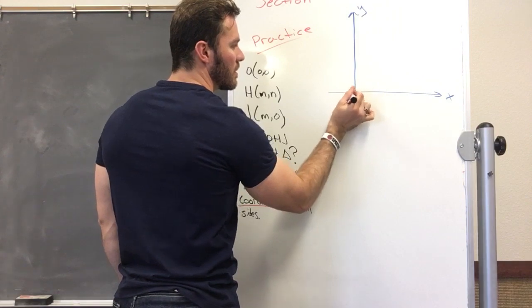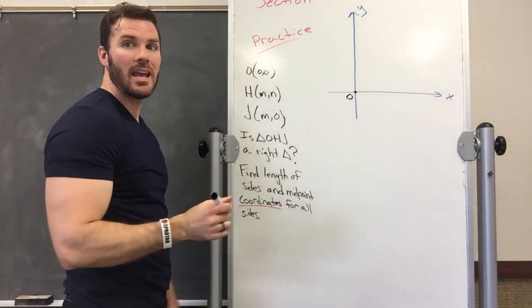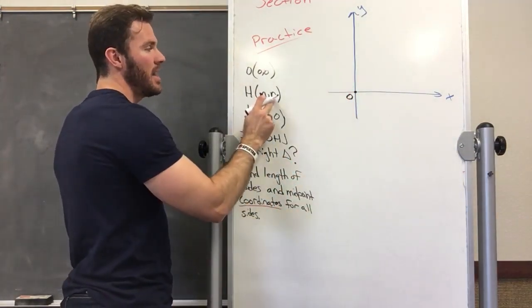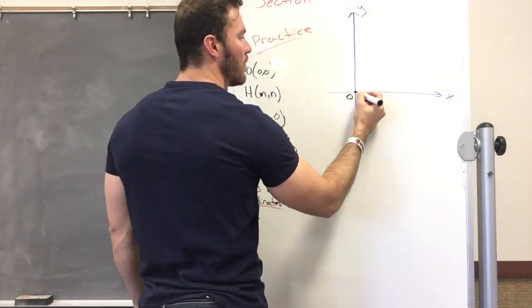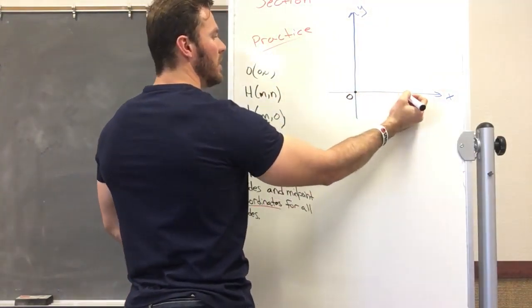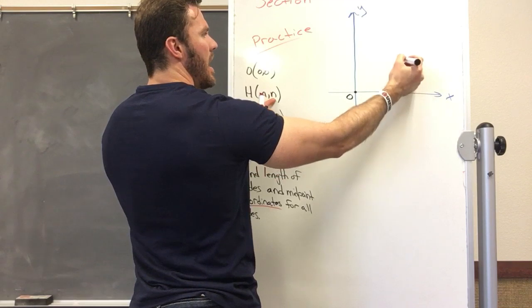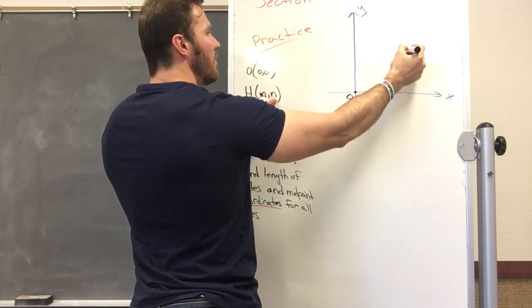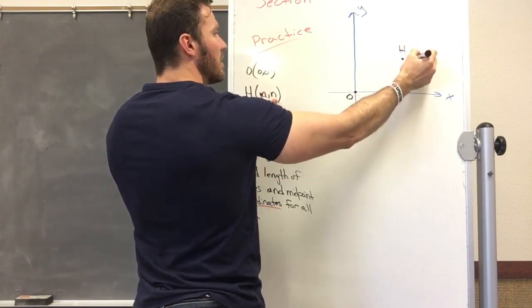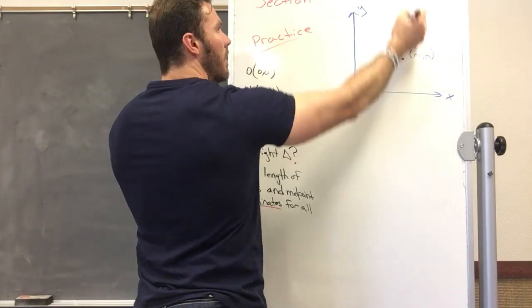H is at (M, N), meaning we went over M units on the X-axis and up N units. Does it really matter how far I go? No, it doesn't. I can go all the way up here if I wanted to make N that long—it's just a letter—but I'm gonna keep it small.